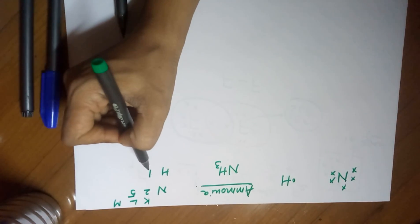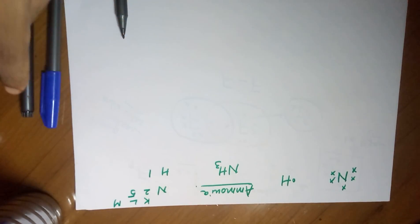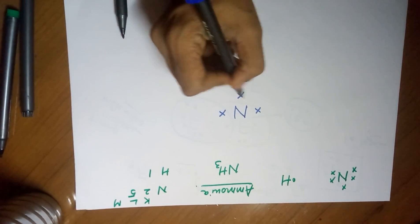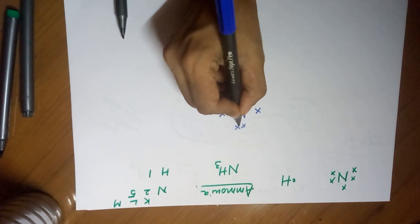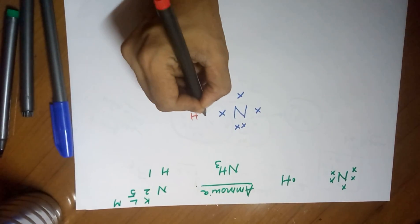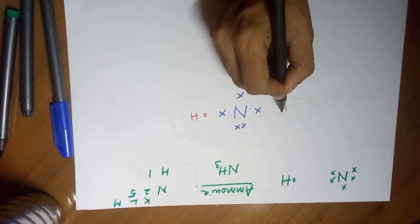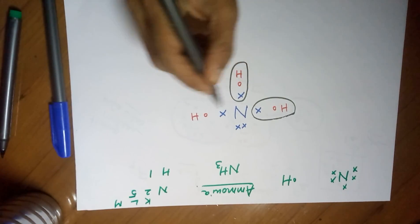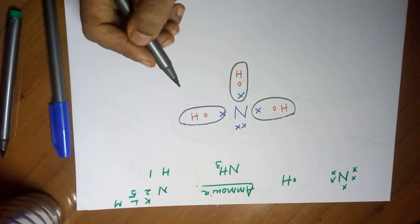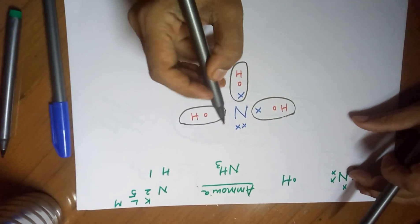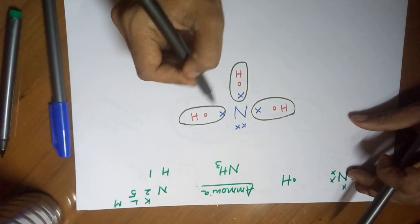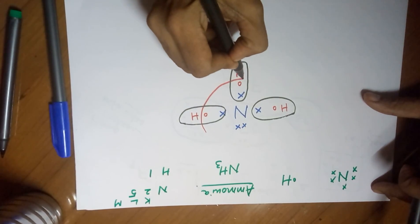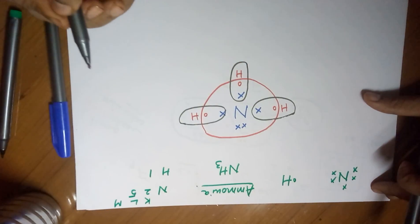Each of the 3 hydrogens will share their 1 electron with nitrogen. To draw the structure, write nitrogen in the center. I deliberately write 3 electrons on the sides to be shared with the hydrogen atoms. I am left with 2 more, which are the lone pair. Each hydrogen comes with its electron: first hydrogen, second hydrogen, third hydrogen. Each hydrogen gets its duplet complete. Nitrogen has 5 electrons of its own and shares 1 from each of the 3 hydrogens to make its octet complete.